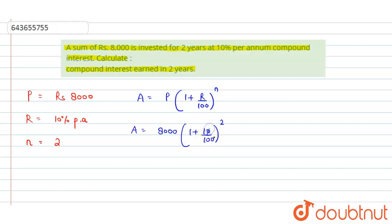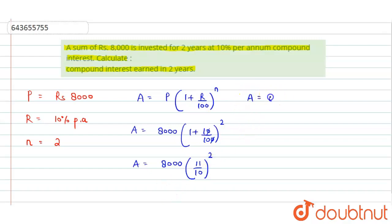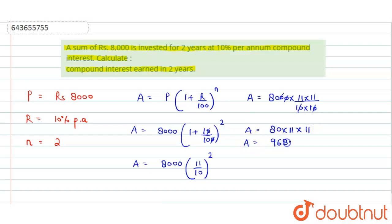Cancelling the zeros, amount equals 8000 multiplied by (11/10) to the power 2, which gives 8000 × (11/10)². Cancelling the two zeros, this becomes 80 × 11 × 11, which equals 9680. So the amount is equal to rupees 9680.